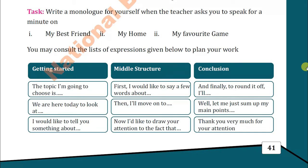My best friend is so-and-so — you can mention the name. She is a very intelligent girl. She helps me all the time; we do our homework together. She belongs to a well-to-do family and lives beside my house. We are also friends at home, and she is very active. We go for a walk daily with my friend. And then you can conclude.